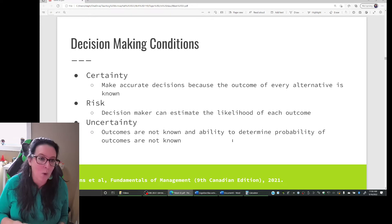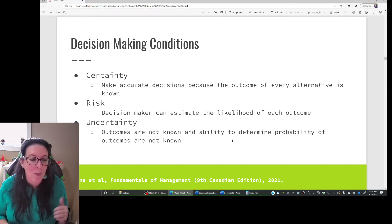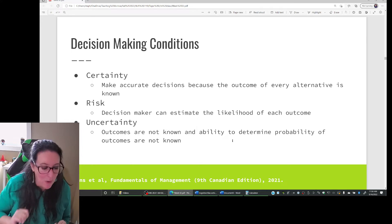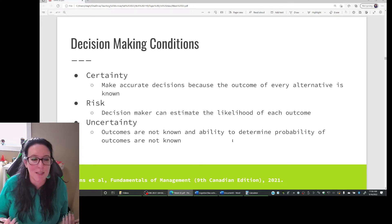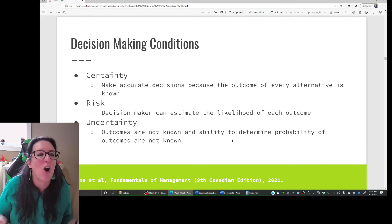How much certainty do we have? So certainty is where we can make accurate decisions because we know the outcome of each choice, each solution we could pick from is known. So if we do X, then Y will happen. We know that. If we raise the price a dollar, then we know sales will drop by 10%. Are we then willing to do that given we are certain about the consequences?